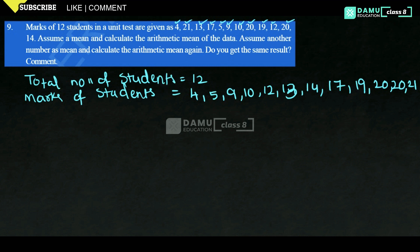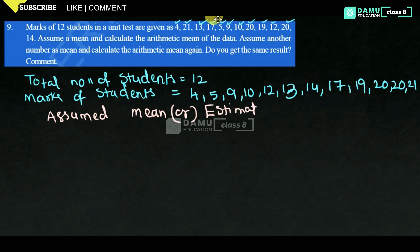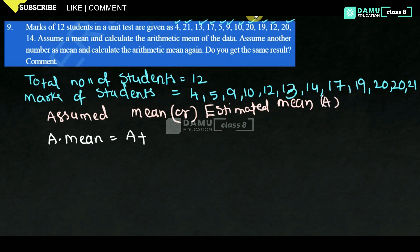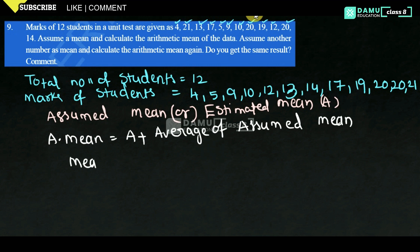The formula for arithmetic mean using assumed mean is: mean equals A plus summation of xi minus A, whole divided by number of observations. This is the formula we have to remember. Mean will be equal to assumed mean plus summation of xi minus A divided by n.